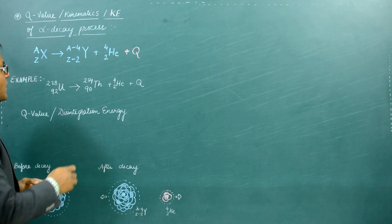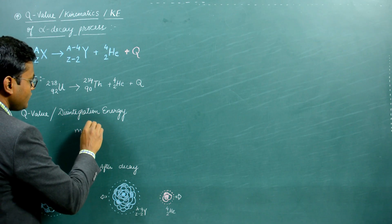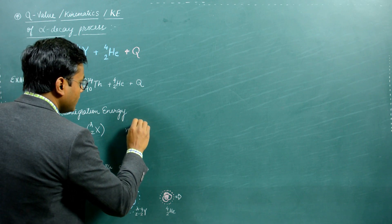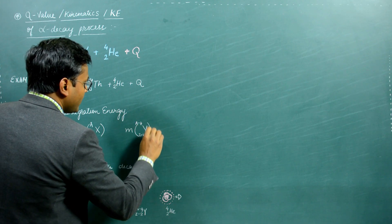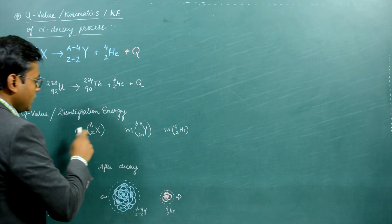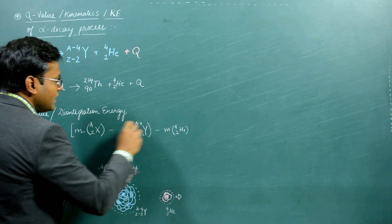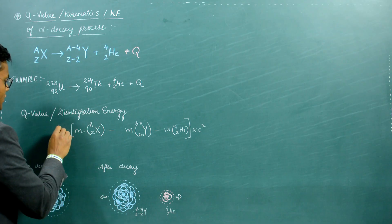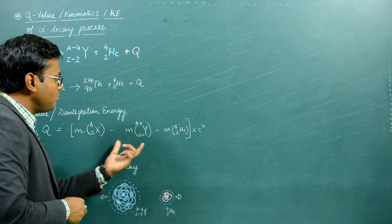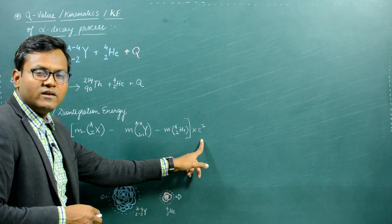In an alpha decay process, the mass of the parent nuclei X is usually greater than the combined mass of the daughter nuclei Y — having mass number A minus 4 and atomic number Z minus 2 — and the alpha particle. The difference in masses of the parent nuclei minus the two daughter products gets manifested as the disintegration energy, also known as the Q value. This mass defect multiplied by C squared gives the total energy released.